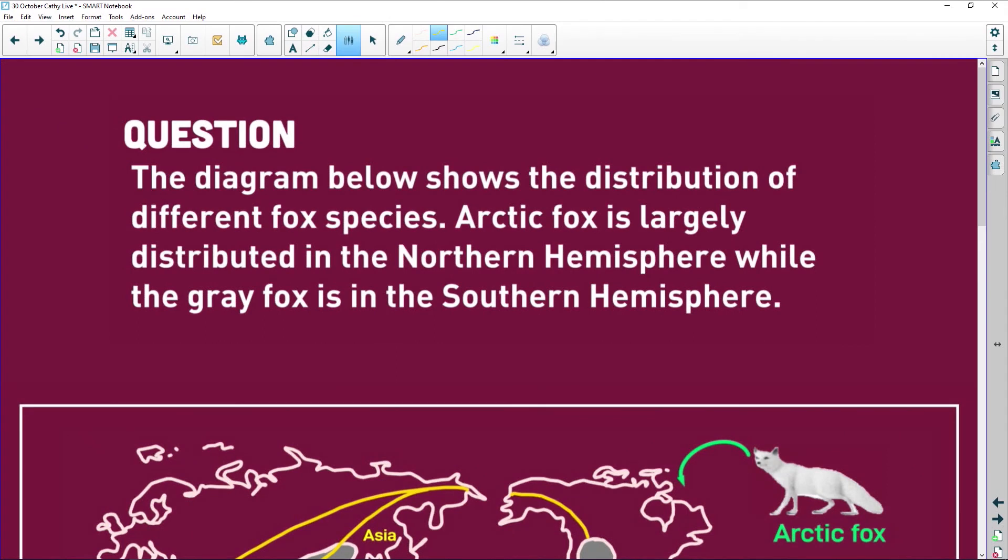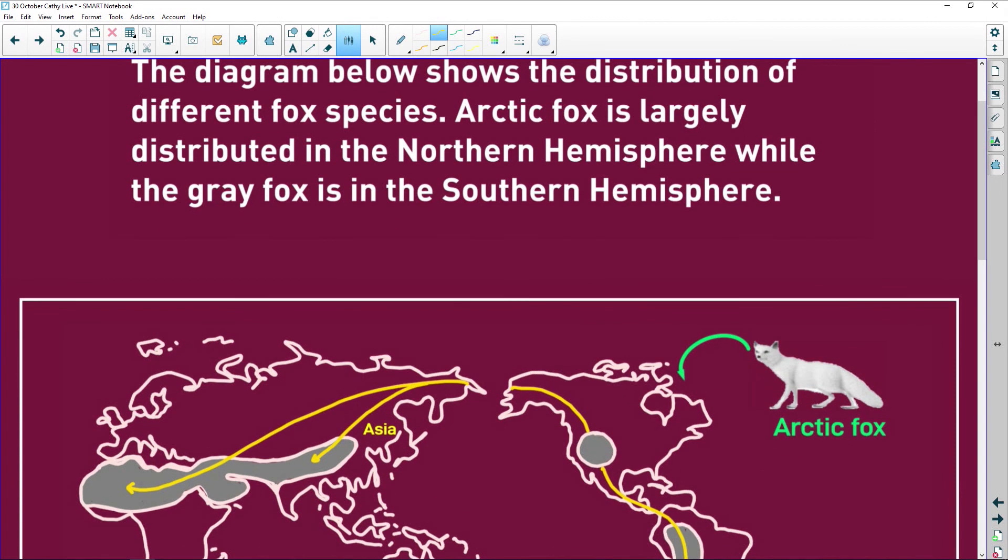The diagram below shows the distribution of different fox species. Now we have the arctic fox, and this is the little white guy here. Clearly arctic, it is in the snow, it is near the arctic and it's very cold, so it's going to have nice thick fur and it's going to be white because it has to tone in with the snow.